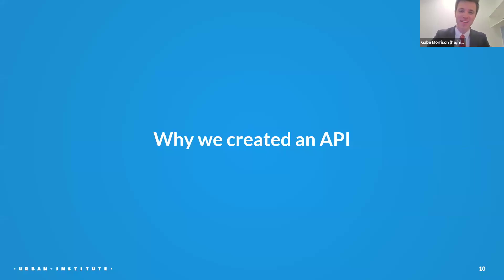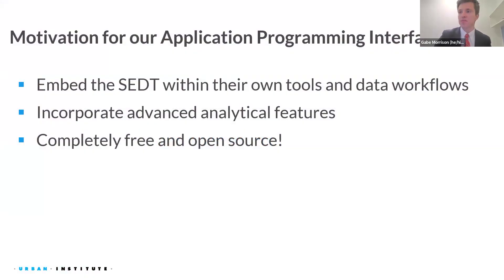My name is Gabe Morrison, and I'm a data scientist at the Urban Institute. I want to talk about why we created the API, how we envision you potentially using it, and what an API is and how ours works. We have power users who use the tool, and we want to facilitate them using it in an even easier way. We've also heard feature requests for the spatial equity data tool, and in our process of creating the API, we've wrapped those updates into our development. Part of the ethos of the tool is that it is free and open source, and the API continues to be free and open source.